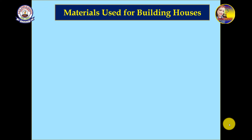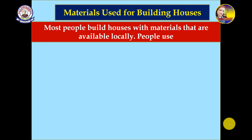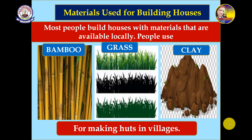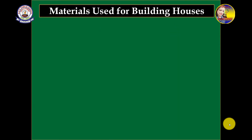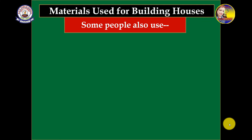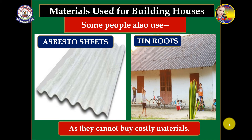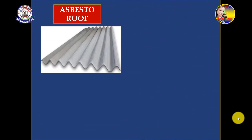Most people build houses with materials that are available locally. People use bamboo, grass, and clay for making huts in villages. Some people also use asbestos sheets or tin roofs as they cannot afford costly materials — these are cheaper materials. You can see this is known as an asbestos roof.